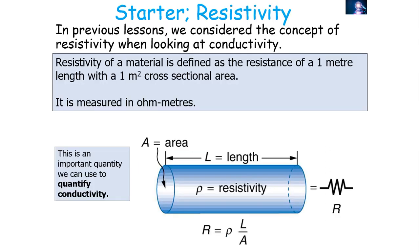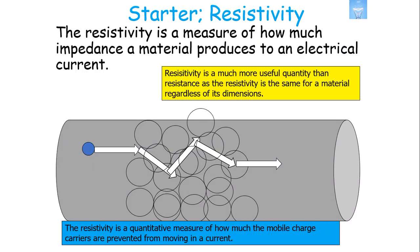In previous lessons, we have considered the concept of resistivity. The resistivity of a material is defined as the resistance of a 1m length with a 1m cross-sectional area of a material. It's measured in ohm metres, and it's a very important quantity, as we can use it to both quantify the resistance and the impedance to the flow of charge, but also the conductivity itself — how much the charge will flow.